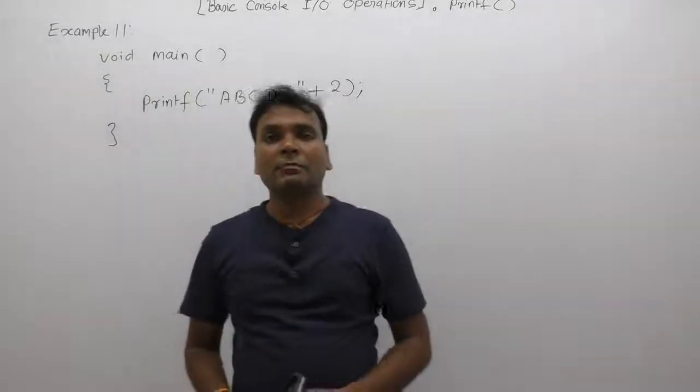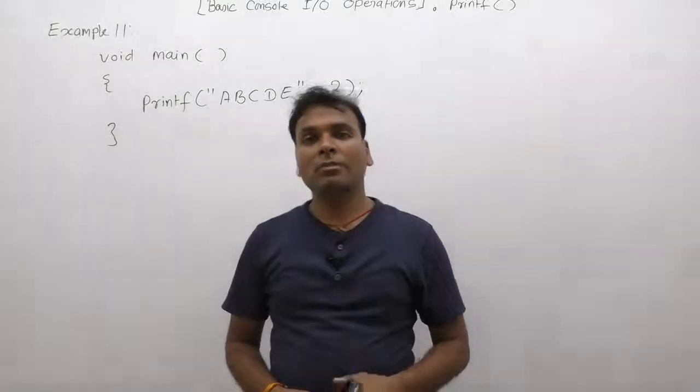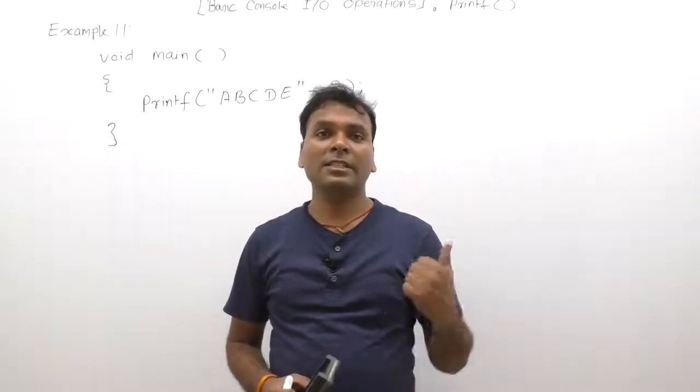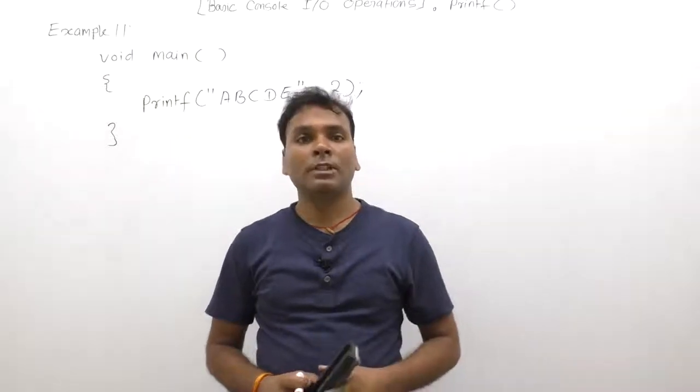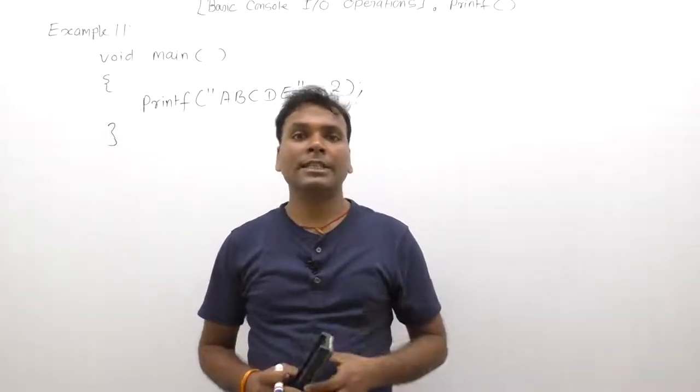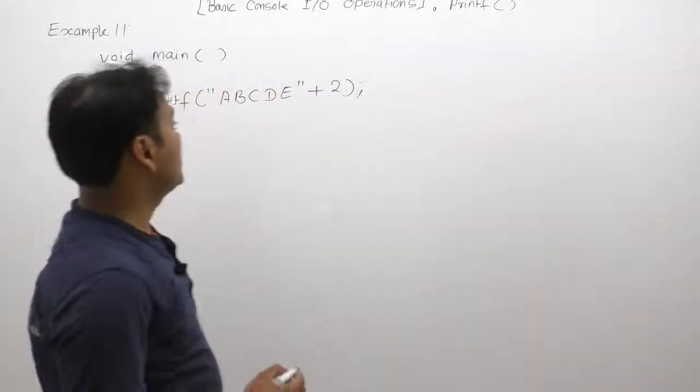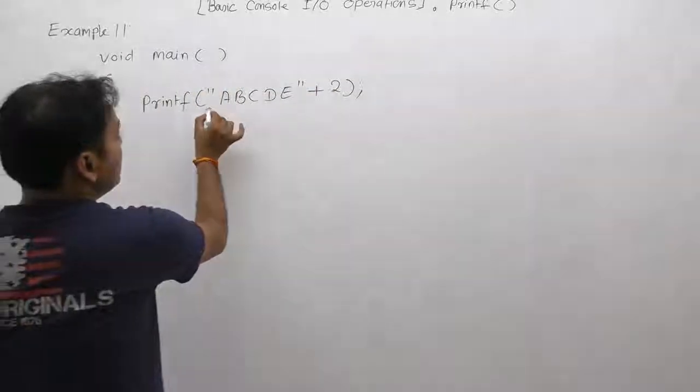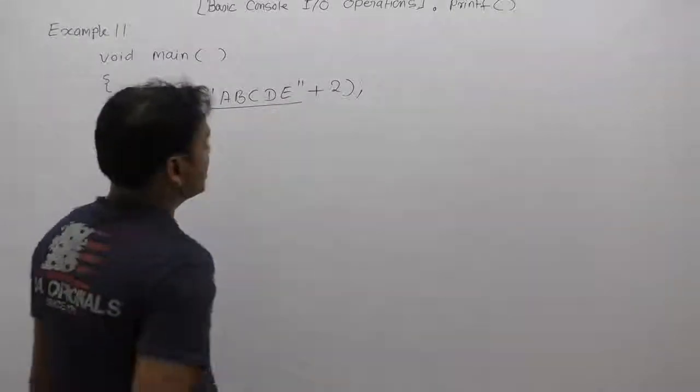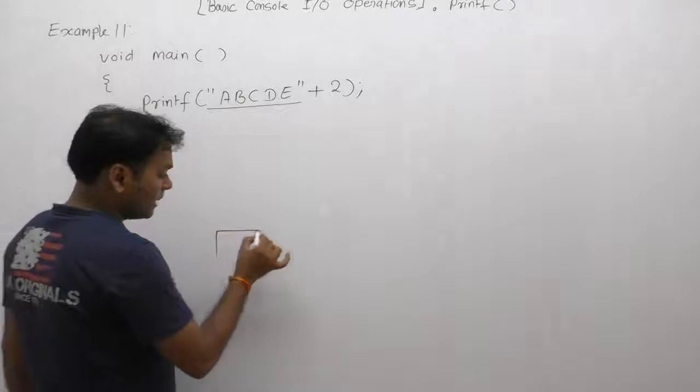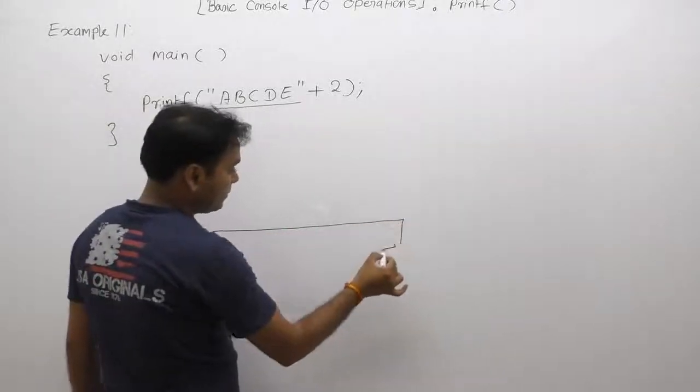Now let's look at the next example, which is a combination of applying arithmetic with strings. As we discussed during videos on printf versus strings, whenever a string is encountered anywhere inside a C program, we represent this string in the form of memory or in the form of an array of characters.